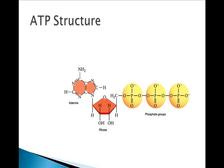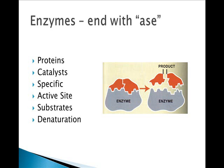That covers biological macromolecules. Now we'll talk about enzymes. Enzymes are types of proteins — almost all of them end with the suffix -ase. These are special proteins involved in chemical reactions, and they are called catalysts, meaning they speed up chemical reactions without being used up themselves. Enzymes are extremely specific: only certain enzymes can catalyze only certain reactions. They work by binding to reactants called substrates at a place on the enzyme called the active site. Enzymes operate at an ideal temperature and pH — higher or lower conditions will denature the enzyme, changing its shape and inactivating it.